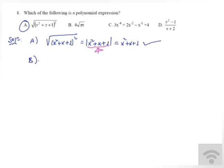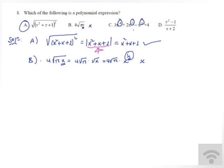Option B involves a radical, so it is not a polynomial. Option C has a negative integer degree, so it cannot be the answer — it is a rational function.